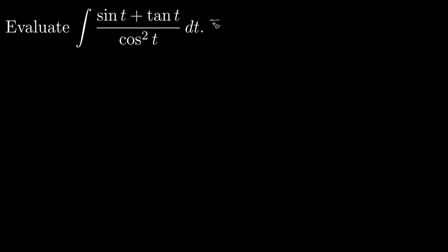To evaluate this integral, we're going to split up the fraction as a sum of two fractions: sine of t over cosine squared t, plus the second one, tangent t over cosine squared t dt.